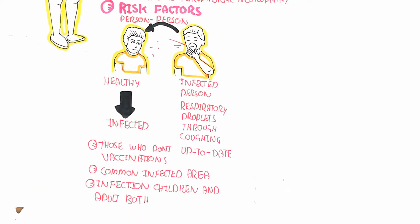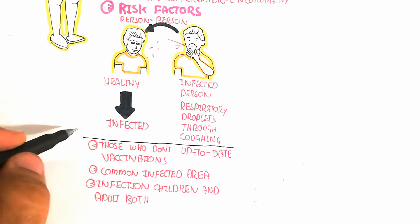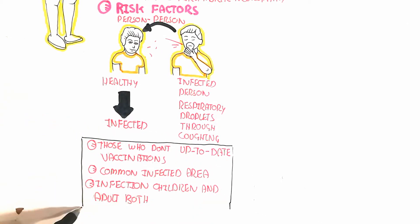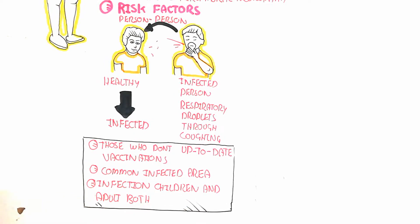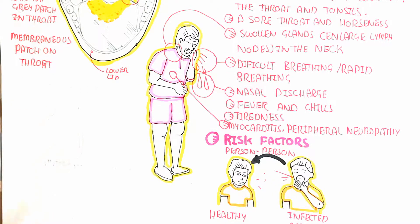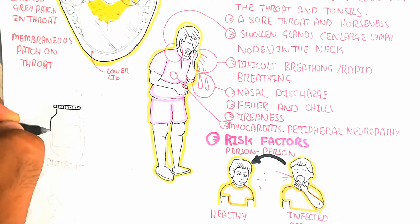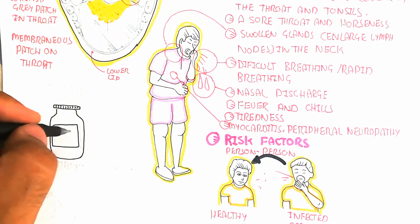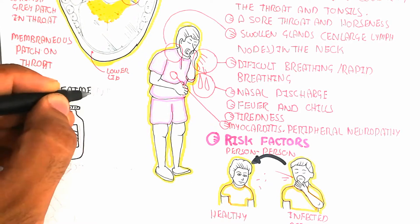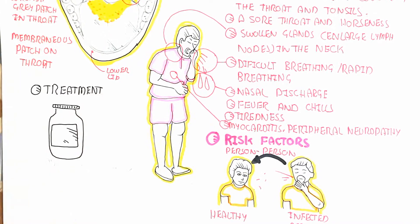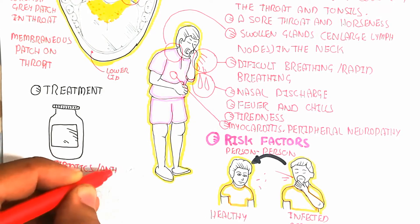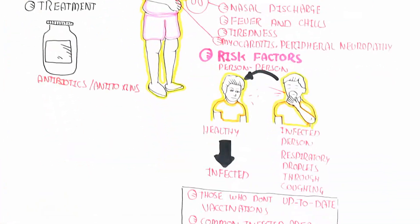The infection affects both children and adults. During treatment, we can use antibiotics because the function of the bacteria is inhibited through antibiotics. Antitoxin drugs are used during toxin production, which inhibits the toxin through the antitoxin drug.